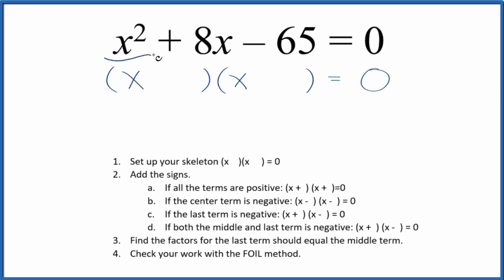Let's factor the equation x squared plus 8x minus 65. The first thing we do is get a skeleton equation here to start working with. Here's our skeleton equation.